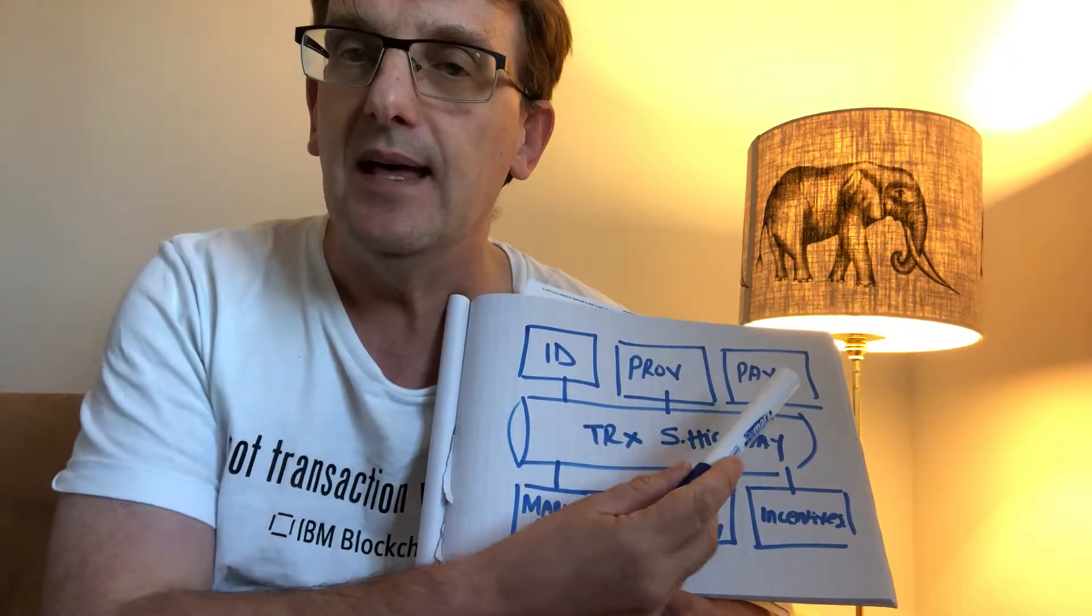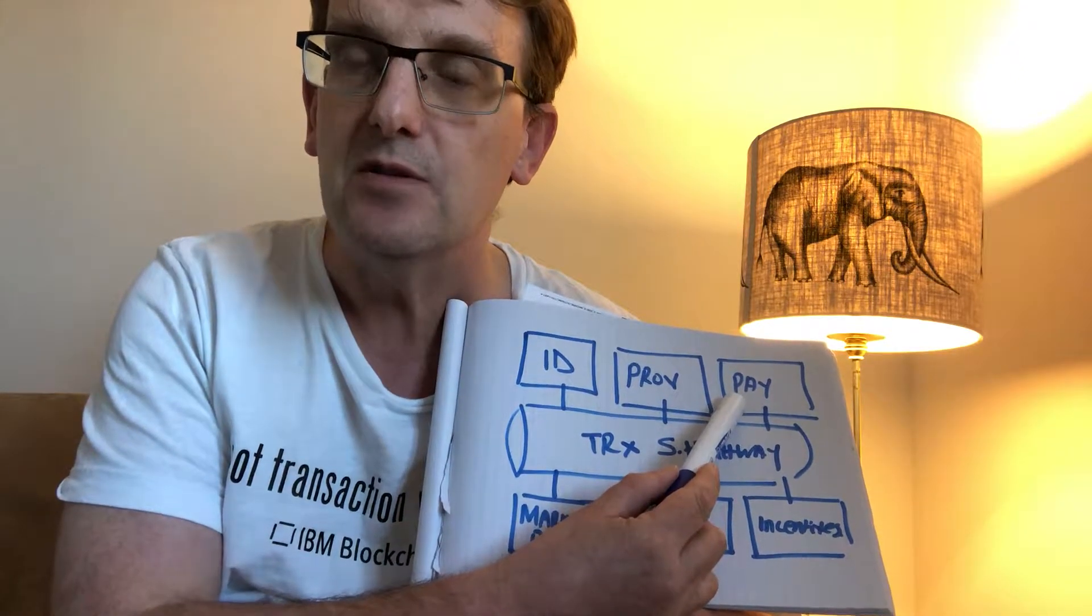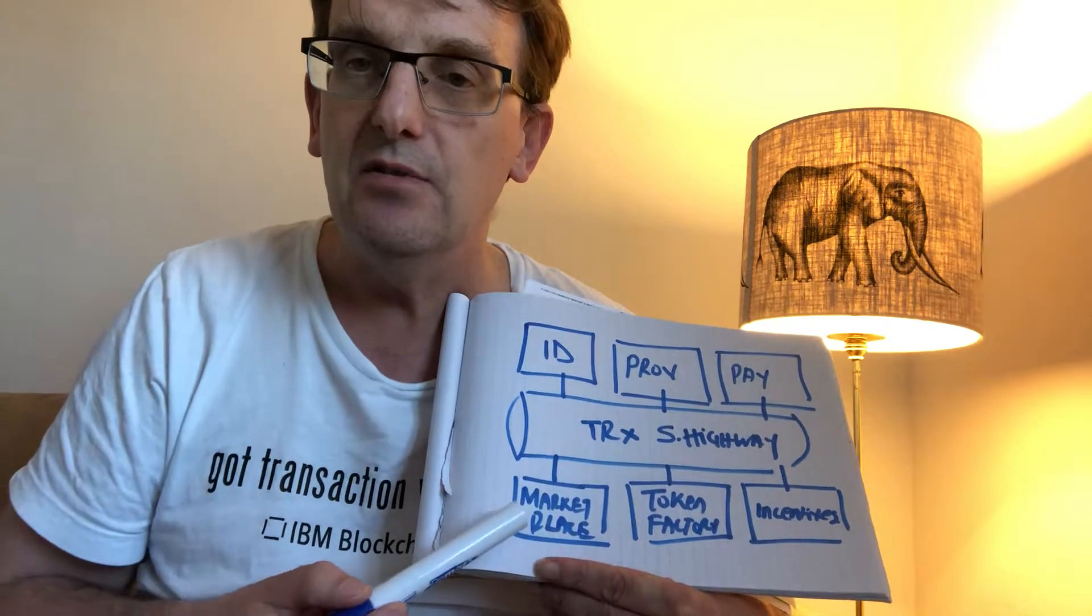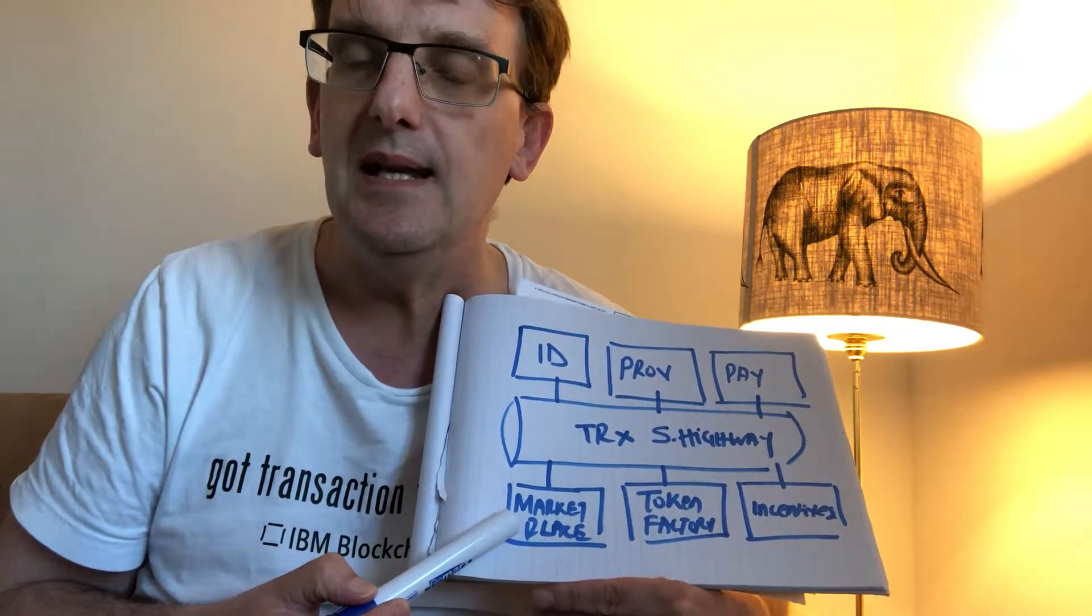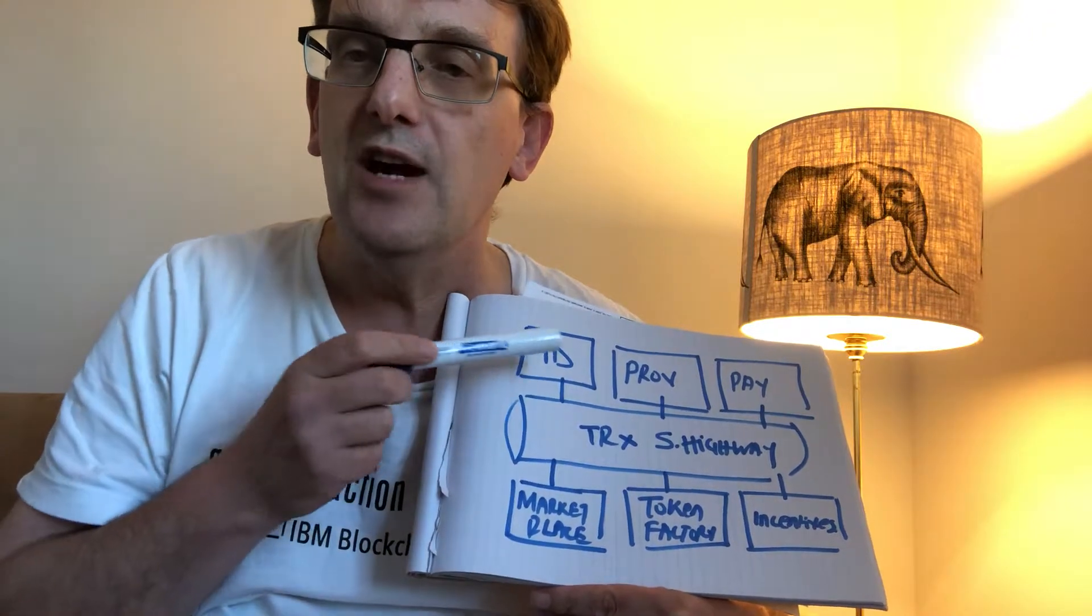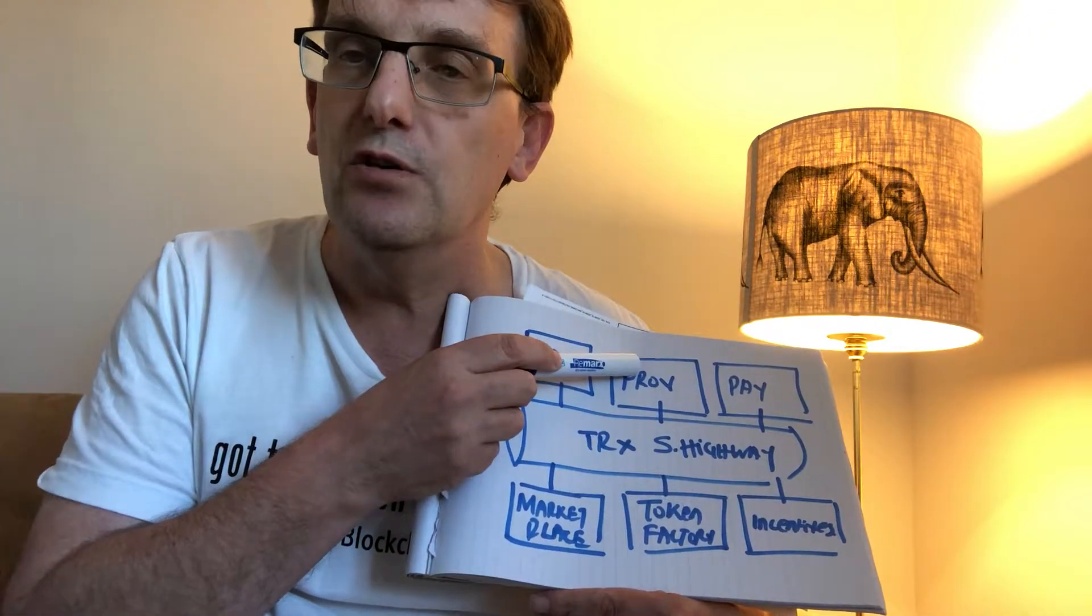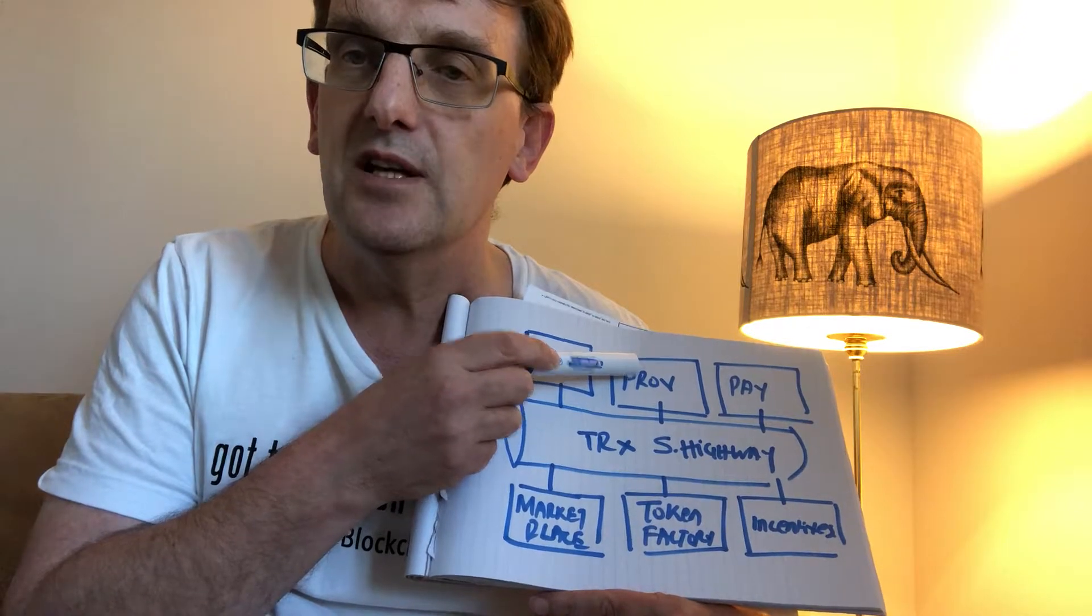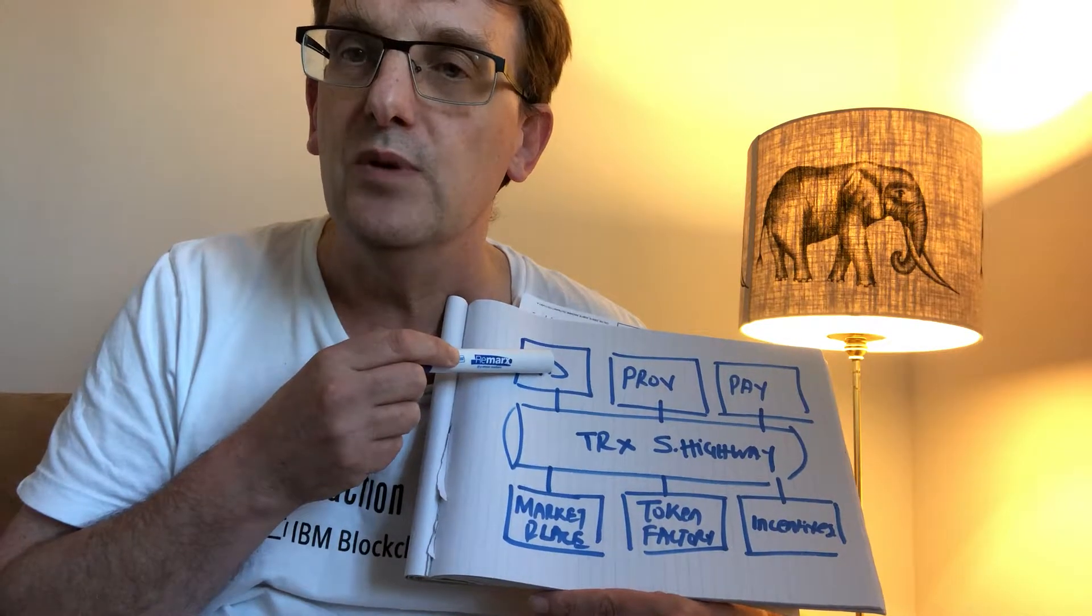If we combine that with the ability to make payments on the internet, we're now creating the information which we need to start to build marketplaces where we can trade ownership of these assets, secure in the knowledge of their provenance, secure in the knowledge of who we're dealing with, and able to transfer value at the same time as we transfer ownership.